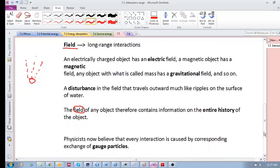Finally, before we move on to 7.6, physicists now believe that every interaction is caused by corresponding exchange of gauge particles. We'll talk a little bit more about this in the next section - how particles are exchanged, and as these particles are exchanged, that's actually how interactions occur. We'll try to explain more of these in the next video. Cheers!